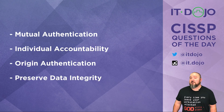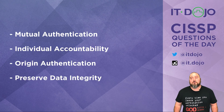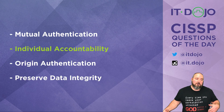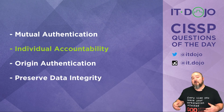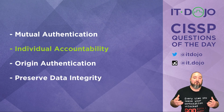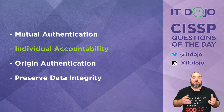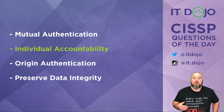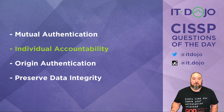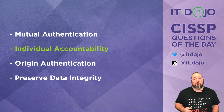The second choice on the list says individual accountability. Yes. It ties in with notions of non-repudiation. If you have a log of things that are done on a system, then you can use that to hold people to account for the things they do on that system. It adds accountability because you have a record of what was done. That's the answer choice we're looking for.